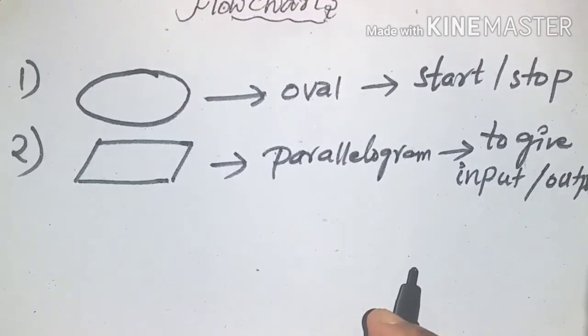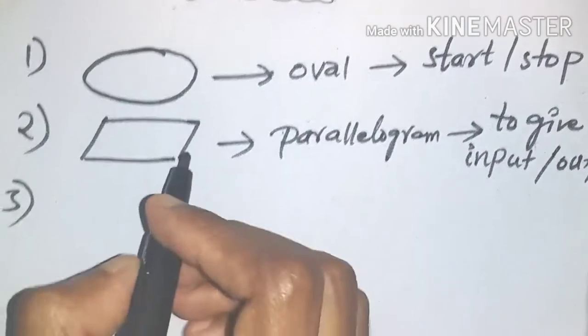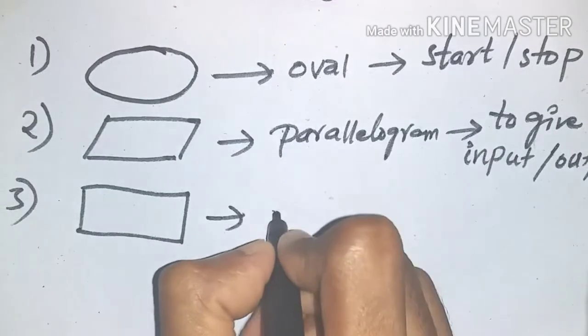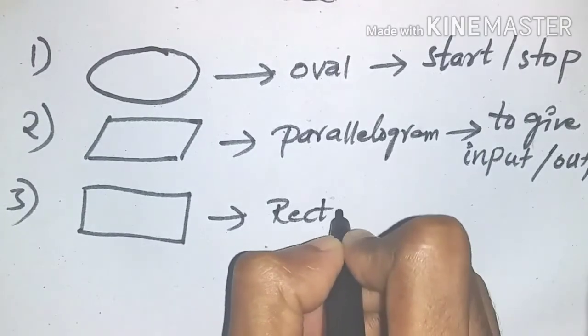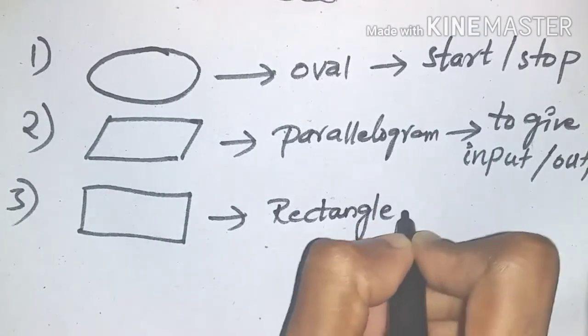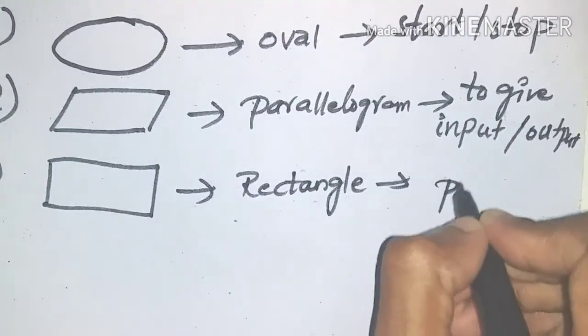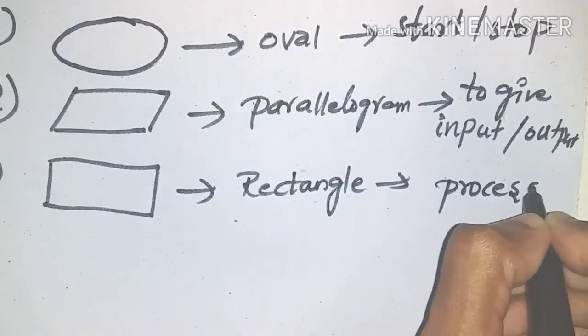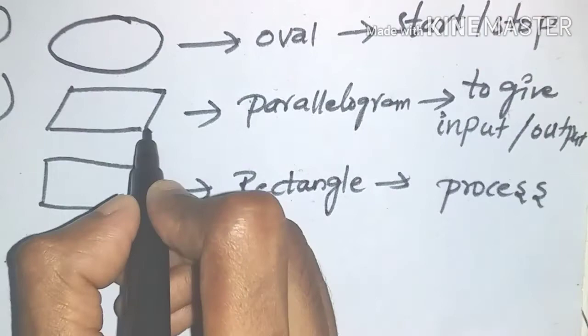To give input or output. Next one is rectangle. This rectangle is used for process, like if you wanted to perform any kind of operations like arithmetic.